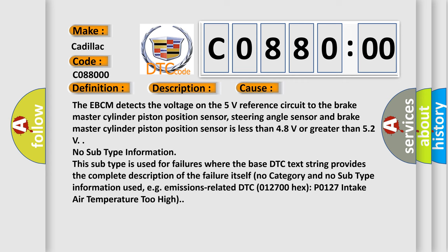The EBCM detects the voltage on the 5-volt reference circuit to the brake master cylinder piston position sensor, steering angle sensor, and brake master cylinder piston position sensor is less than 4.8 volts or greater than 5.2 volts.